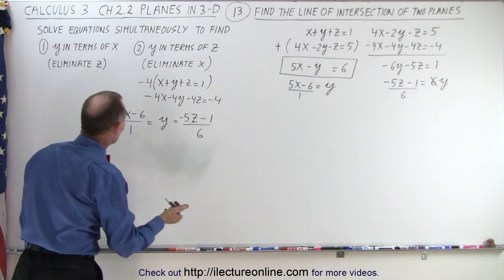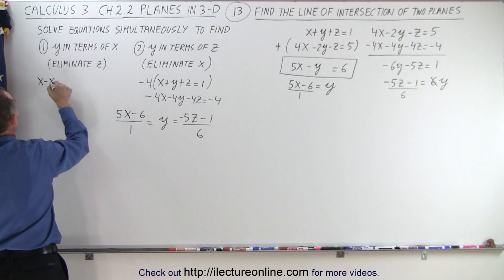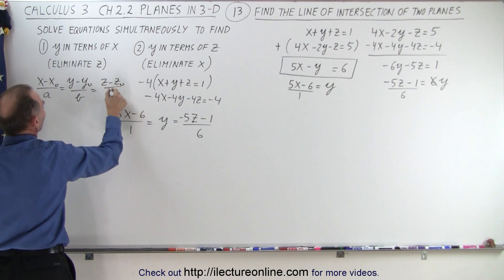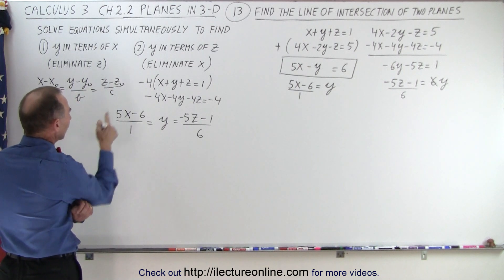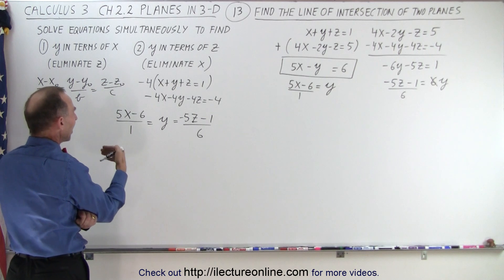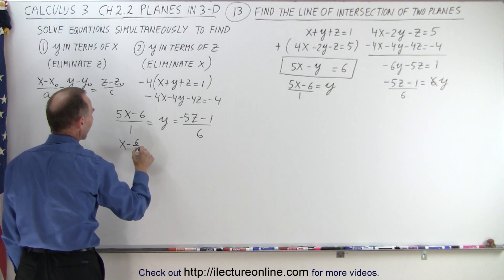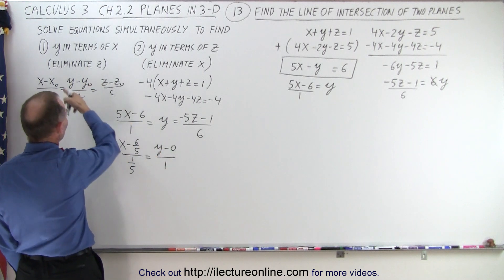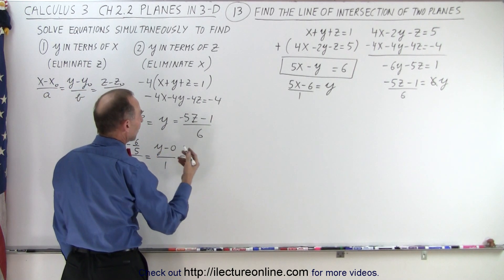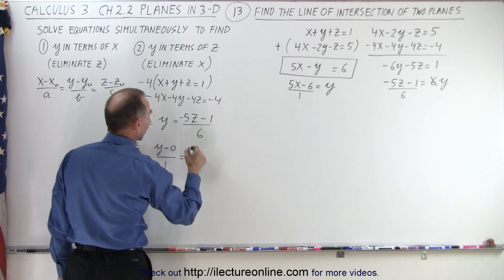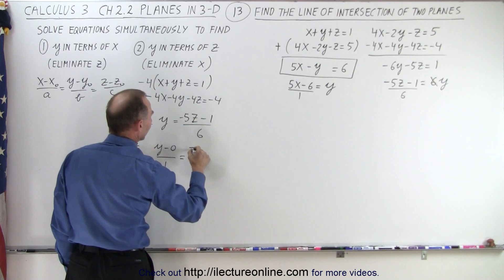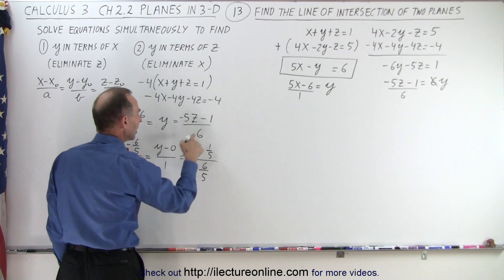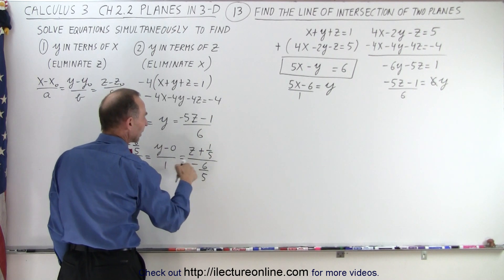Now I need to turn that into a legitimate equation for a line where x minus x-naught over a equals y minus y-naught over b equals z minus z-naught over c. On this one, I should divide both numerator and denominator by 5. If I do that, I get x minus 6/5 over 1/5, which is equal to y minus 0 over 1. Then here, I'm going to divide both top and bottom by negative 5 because I want the positive z. Dividing by negative 5, I get z plus 1/5 divided by negative 6/5.